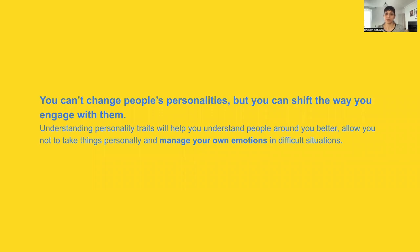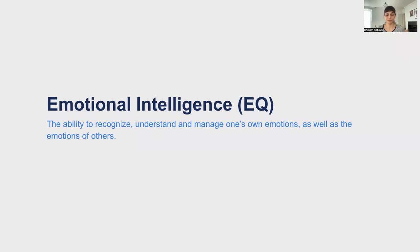You can't change people's personalities, but you can shift the way you engage with them. Understanding personality traits will help you understand people around you better, allow you not to take things personally, and manage your own emotions in difficult situations. So far, we mostly talked about other people — now let's take a look at our own selves. Let's talk about emotional intelligence. Emotional intelligence is the ability to recognize, understand, and manage your own emotions, as well as the emotions of others. In order to understand other people, empathize with them, and build strong relationships, you need to leverage your own emotional intelligence.